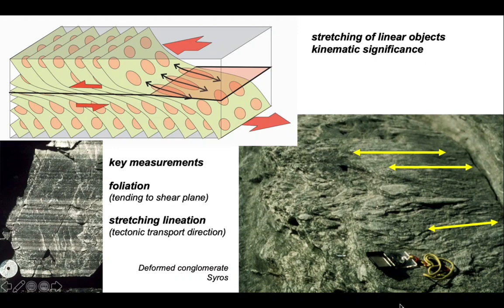So key measurements are the intense foliation, when it becomes really intense, because that's pretty much the orientation of the shear plane. Together with the stretching lineation, the long axes picked out by stretched minerals or other aggregates of minerals. And this gives us the tectonic transport direction. So those are the two key measurements to make in shear zones.